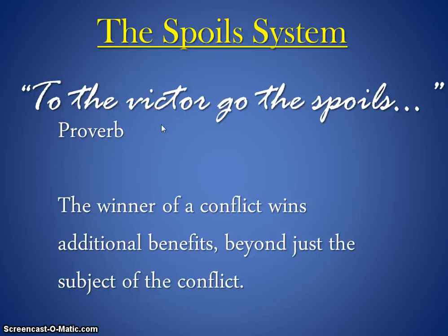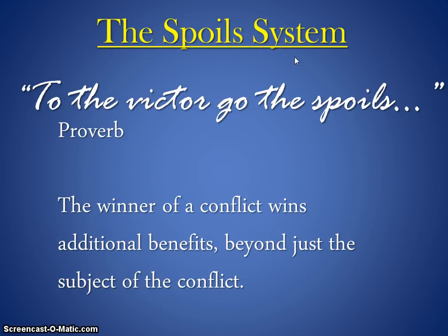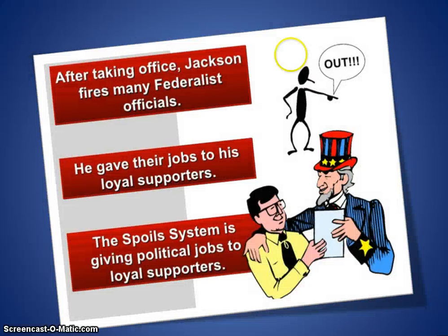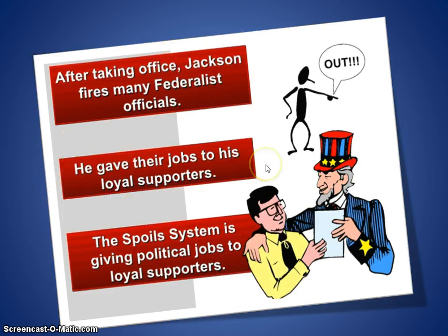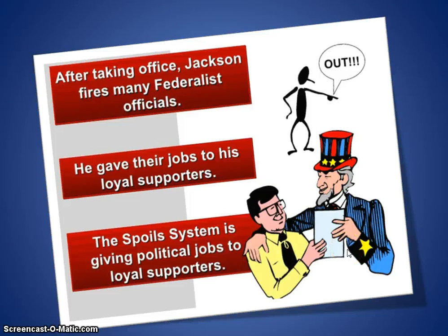You can also be a victor in an election, and this is how Jackson took that proverb and created the spoils system. After taking office, Jackson fired many federalist officials and gave their jobs to his loyal supporters and friends. The spoils system means giving political jobs to loyal supporters — and that's exactly what Jackson did.